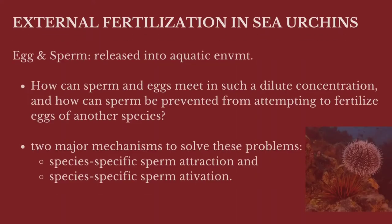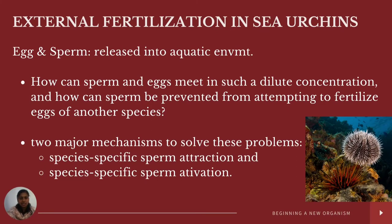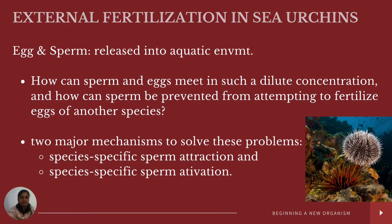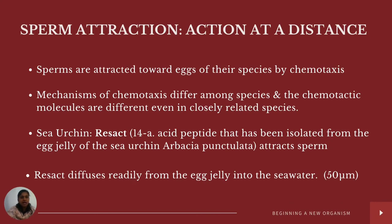In external fertilization in sea urchins, both egg and sperm are released into the aquatic environment. The question is how sperm and eggs can meet in such dilute concentrations and how sperm can be prevented from fertilizing eggs of another species. There are two major mechanisms: species-specific sperm attraction and species-specific sperm activation. Sperm are attracted towards eggs of their own species by chemotaxis, that is, by chemical attraction, and these chemotactic mechanisms differ among species.